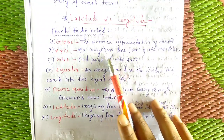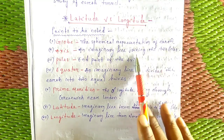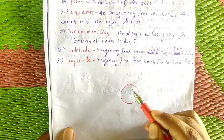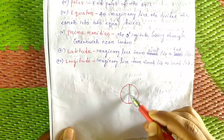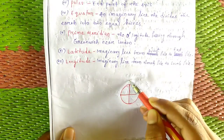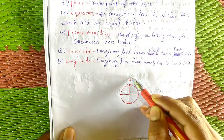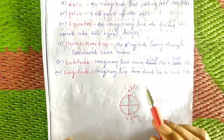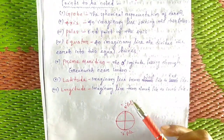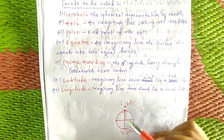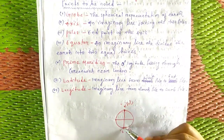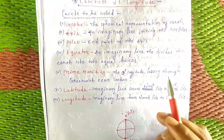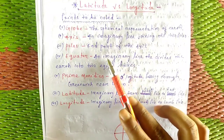Next, we have an imaginary line joining the two poles — the north pole and the south pole. This imaginary line is called the axis. The poles are the endpoints of the axis.